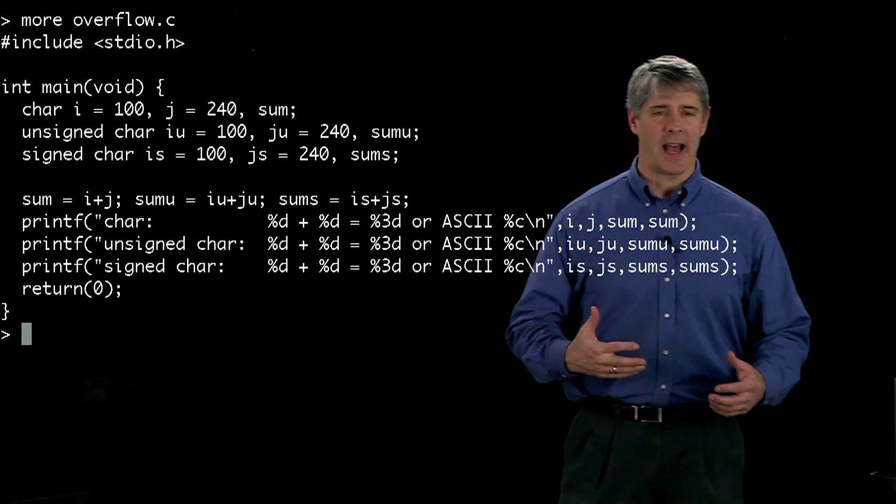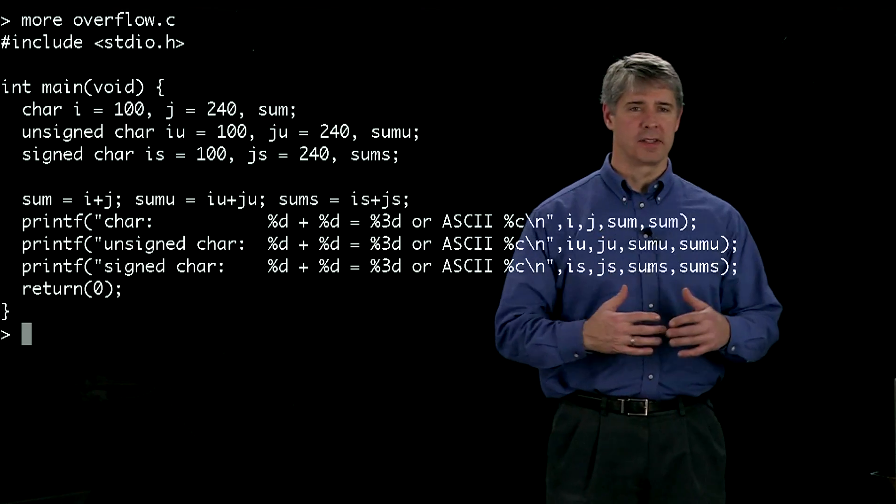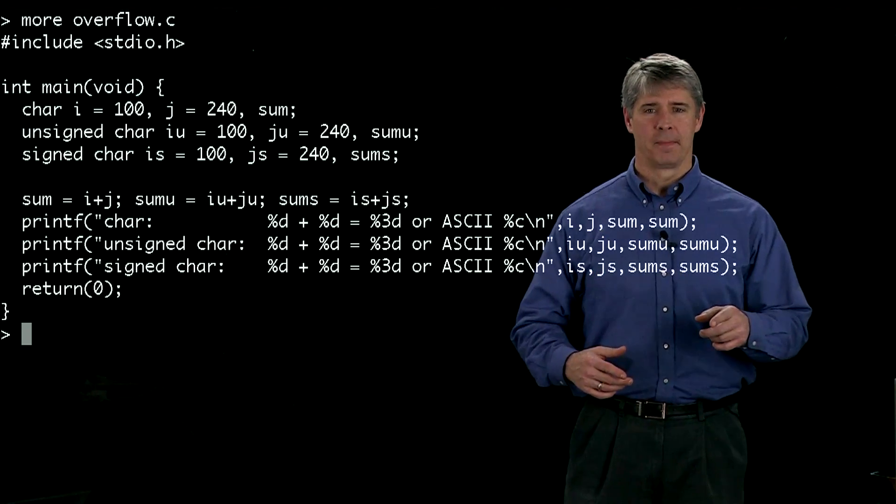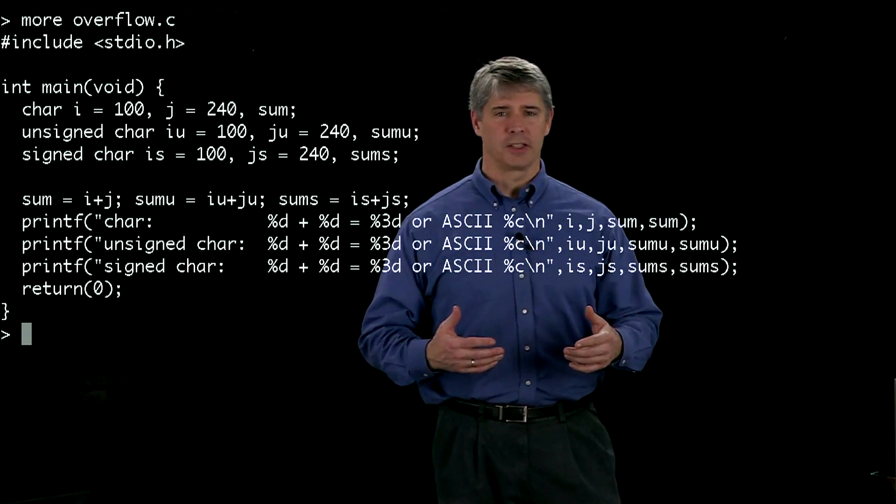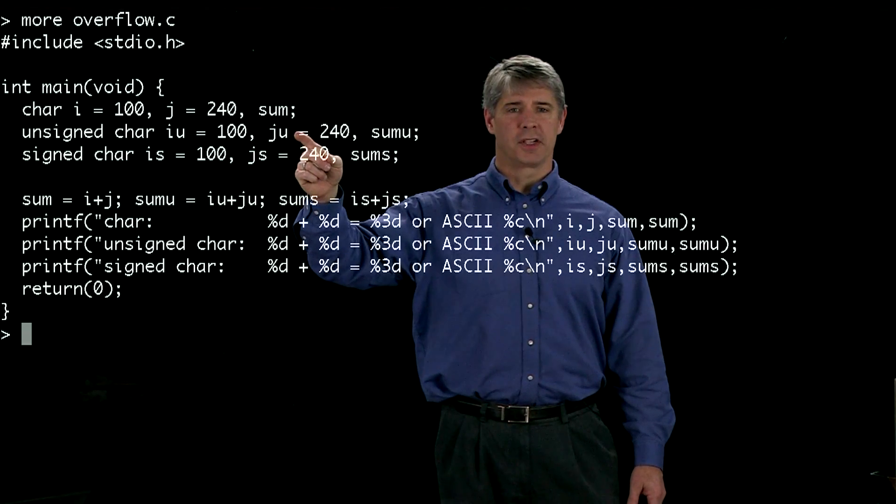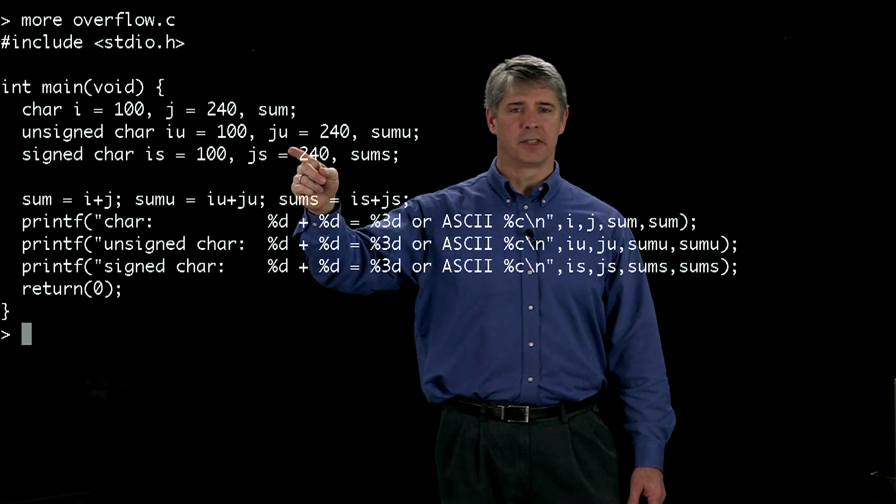So we can see the ASCII character that corresponds to the sum of i and j. And then we just do the same thing again twice more with an unsigned char version of it and a signed char version.